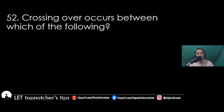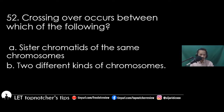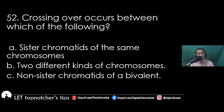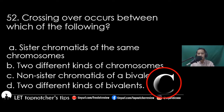Item 52: Crossing over occurs between which of the following? A) sister chromatids of the same chromosomes, B) two different kinds of chromosomes, C) non-sister chromatids of a bivalent, D) two different kinds of bivalent. The best answer is letter C, non-sister chromatids of a bivalent.